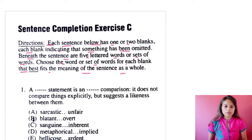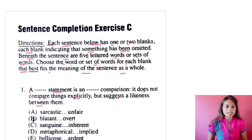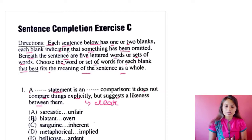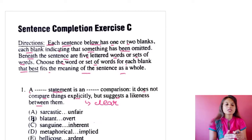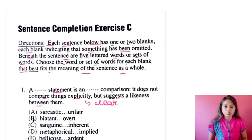The first question: 'A [blank] statement is an [blank] comparison. It does not compare things explicitly but suggests a likeliness between them.' Explicitly means in a clear and detailed manner. So they are talking about a statement and a comparison that does not compare things clearly, but suggests a likeliness between them.